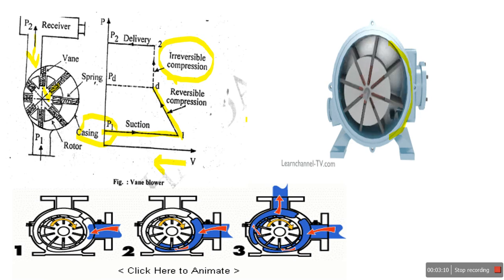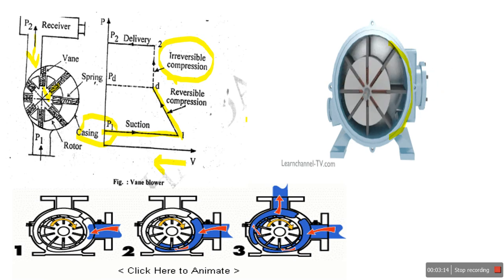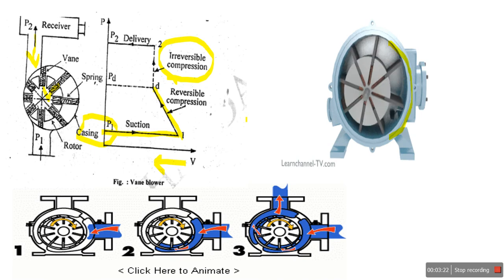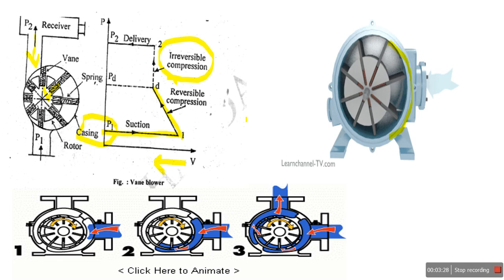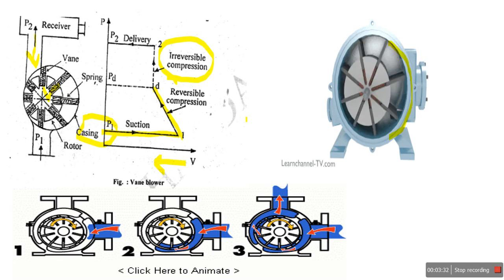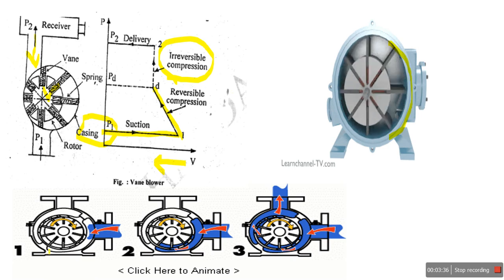The vane type compressor is used to deliver up to 350 cubic meters of air per minute at a pressure ratio up to 4. The speed of the vane type blower is limited to about 250 RPM. Compared to the reciprocating compressor, which is a high-speed compressor in single or two stages, the vane compressor runs at very low RPM.